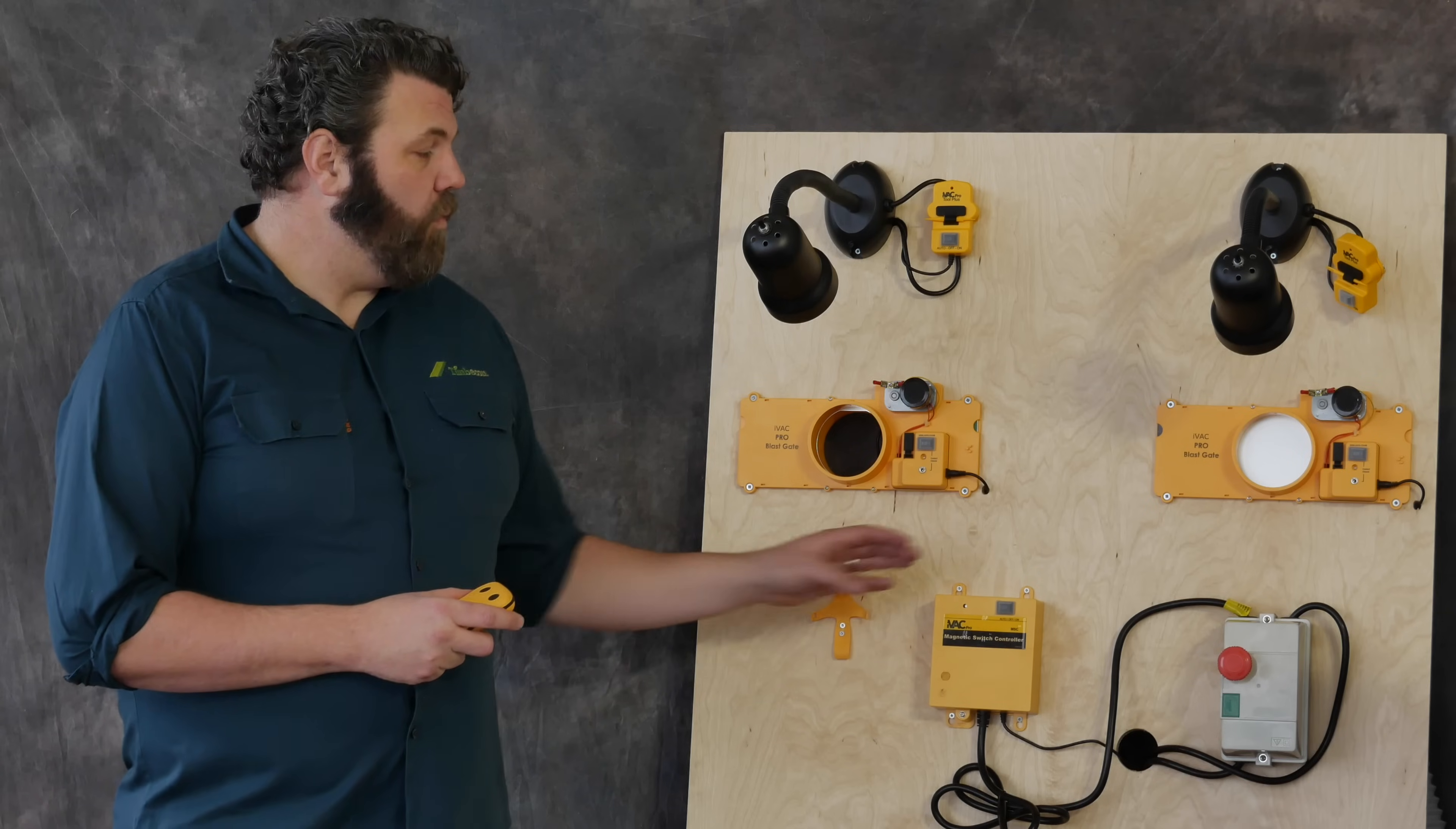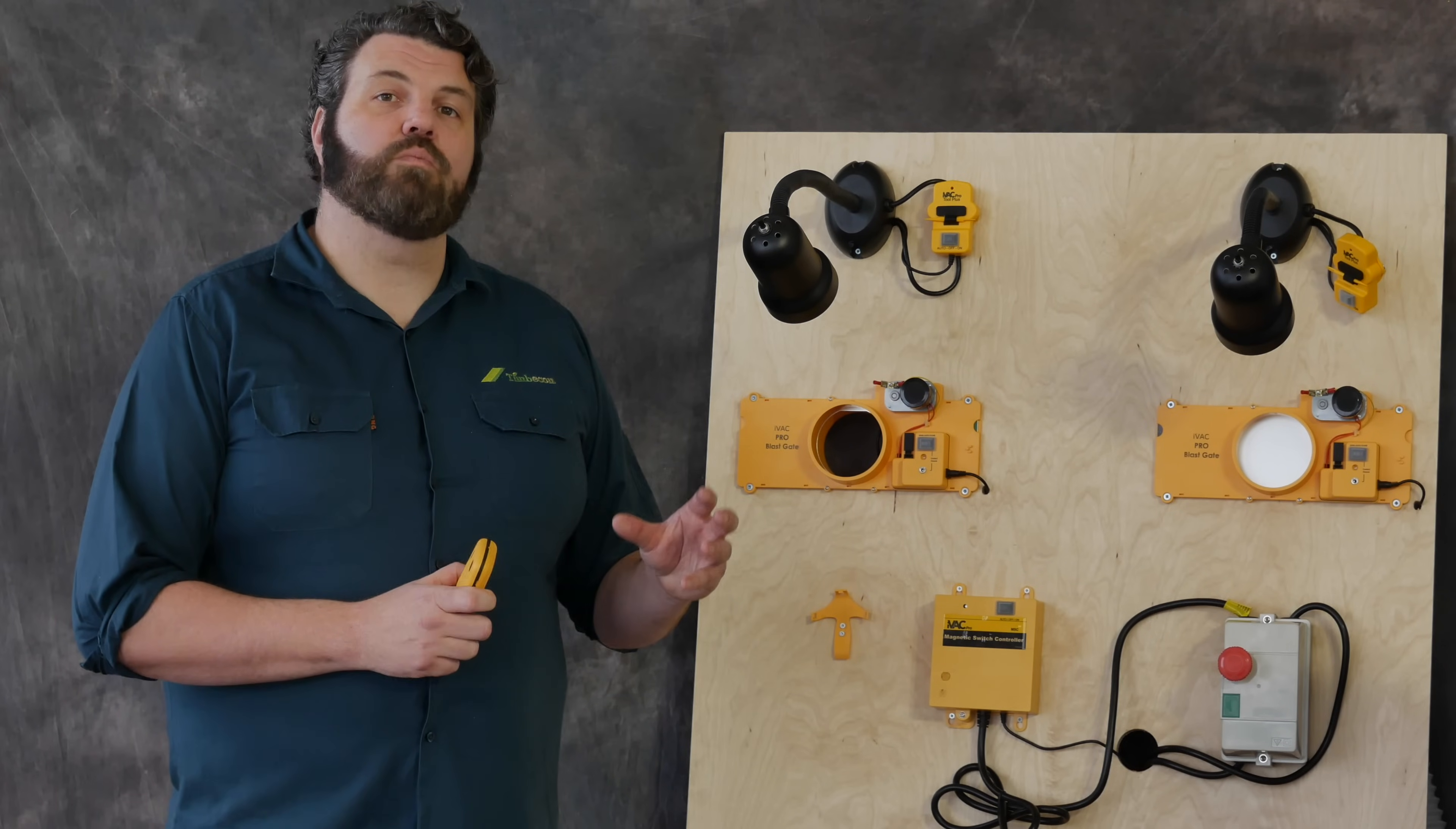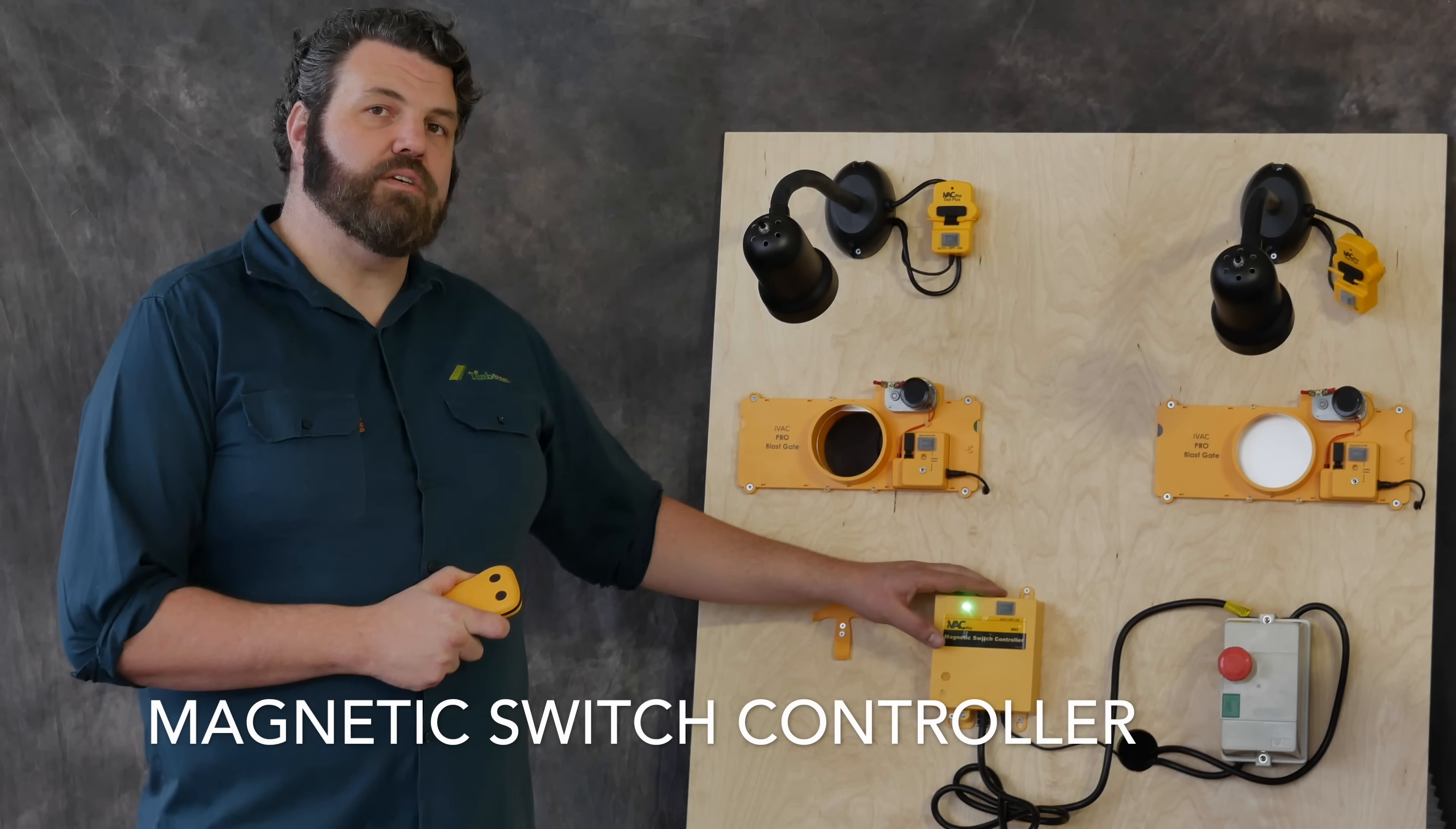Now what IVAC have done is they've developed the MSC for our markets. What you do is you wire the IVAC Pro into a magnetic no volt release switch. Most of the dust extractors in the Australian market are fitted with mechanical no volt release switches, which can't be controlled by something like the IVAC Pro. Instead, what you do is you bypass your old mechanical NVR and you plug your dust extractor directly into the magnetic NVR, and then the current is controlled by the MSC.